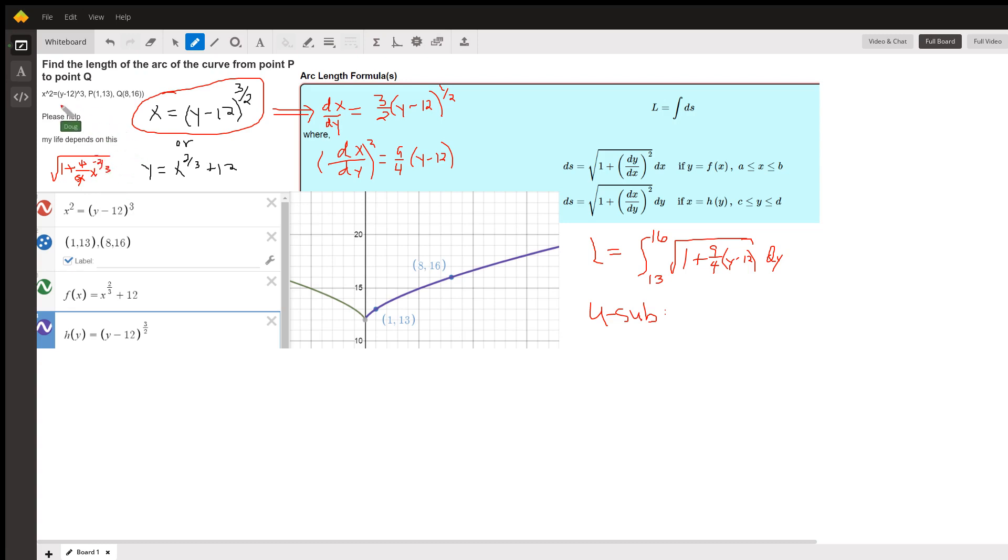But if you solve this for x, you just have to take the square root of both sides, which means you'll have y minus 12 to the 3 halves power. The derivative of x with respect to y, using the power rule, followed by the chain rule. But that just gives us a 1 out here, because the derivative of the inside is 1.